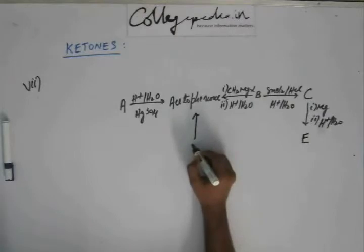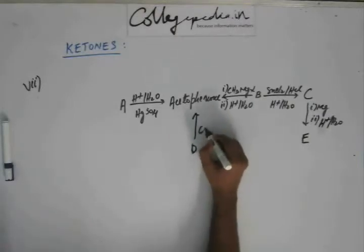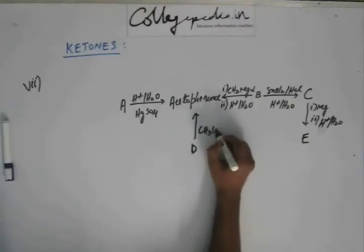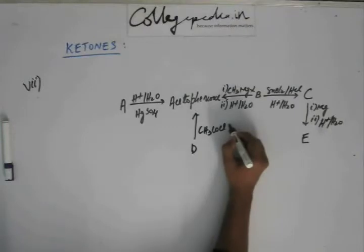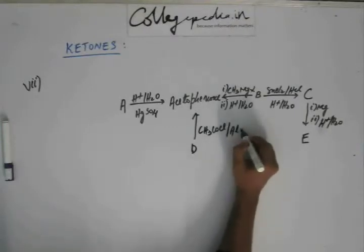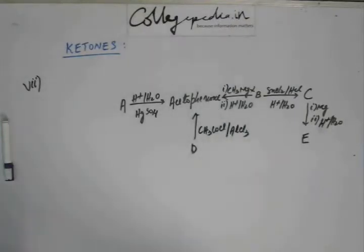I will get acetophenone from D if I add acetyl chloride and AlCl3.